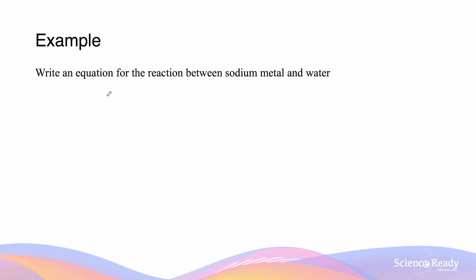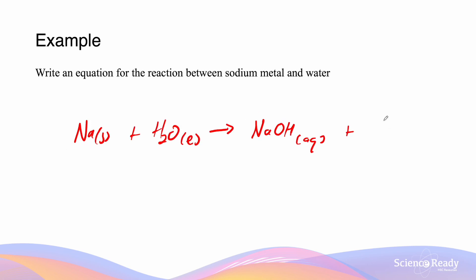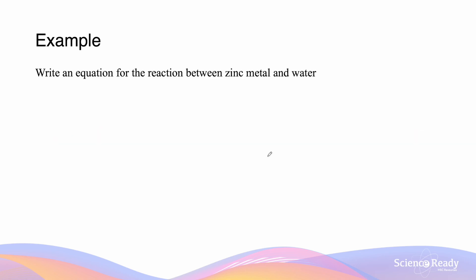Our first example asks us to write an equation for the reaction between sodium metal and water. Sodium will react with cold water to form hydroxide because it is a highly reactive group 1 metal. Remember that we need to balance our equation. The next question asks us to write the equation for the reaction between zinc and water. Zinc is a transition metal, so it is more stable, meaning that the oxide formed will not lead to the formation of hydroxide.